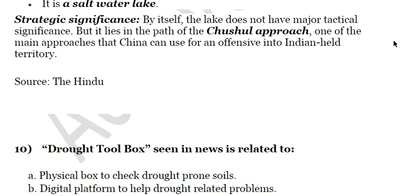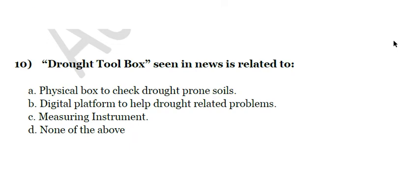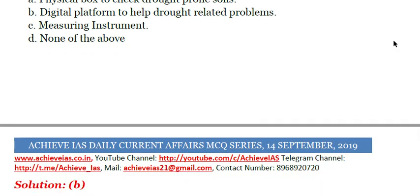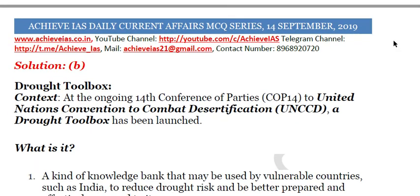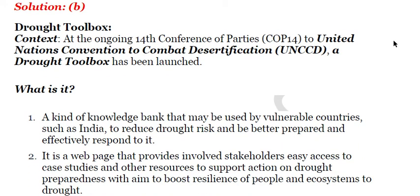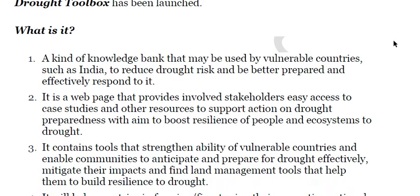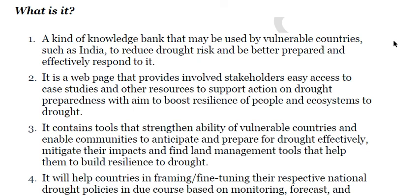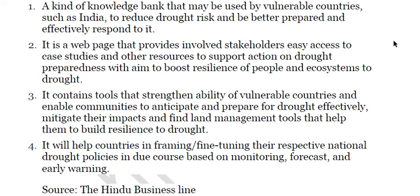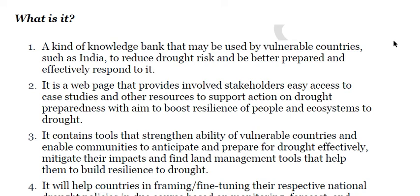The tenth question: Drought Toolbox seen in news is related to — A) a physical box to check drought-prone soils, B) a digital platform to help drought-related problems, C) a measuring instrument, D) none of the above. The answer is B, a digital platform to help drought-related problems. The context is the ongoing 14th Conference of Parties to the United Nations Convention to Combat Desertification, where the Drought Toolbox was launched. It is basically a knowledge bank that may be used by vulnerable countries such as India to reduce drought risk and be better prepared and effectively respond to it.